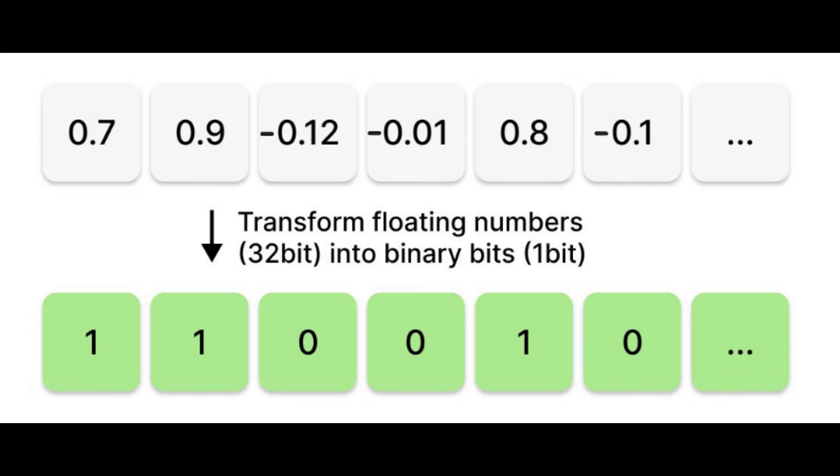into a single bit. You only need a 32nd of memory space to store a binarized vector. This can lead to increased search speed and reduced storage costs.